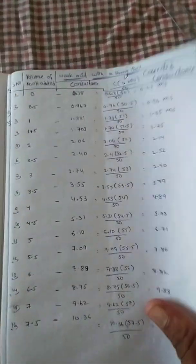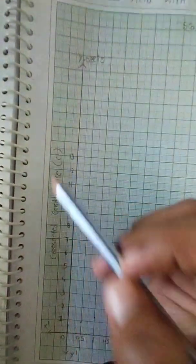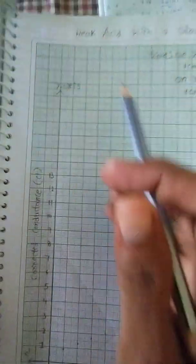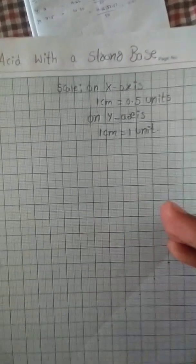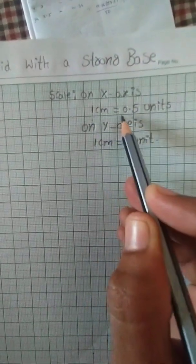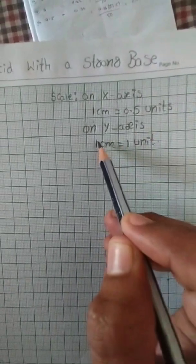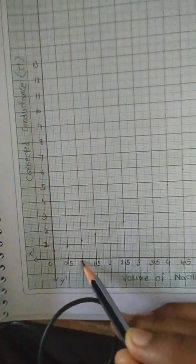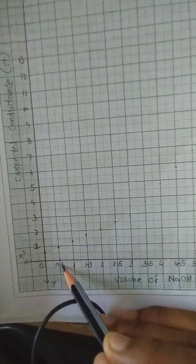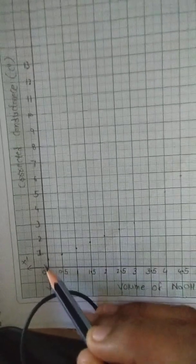After determining the corrected conductance of the weak acid, we have to plot a graph of volume of sodium hydroxide versus corrected conductance. Volume of sodium hydroxide is taken on the x-axis and corrected conductance is taken on the y-axis. The scale considered is: on the x-axis, 1 cm is equal to 0.5 units, and on the y-axis, 1 cm is equal to 1 unit.